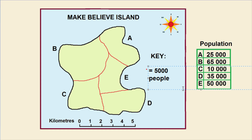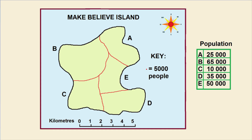Now I'm going to start putting our dots representing the population on the map. Region A has 25,000 people so that will be five dots: one, two, three, four, five.